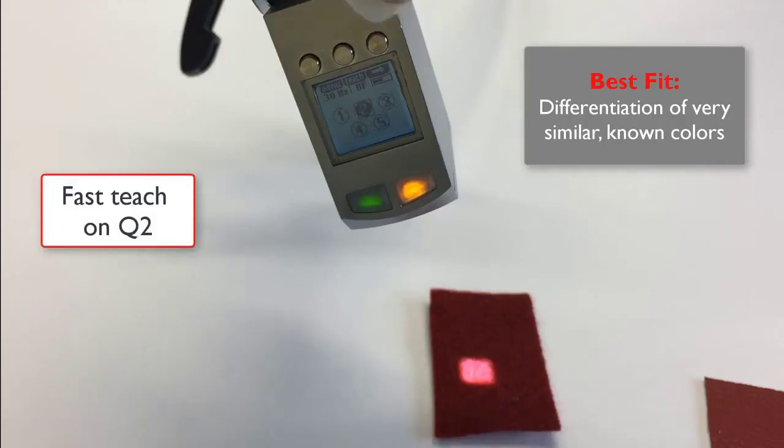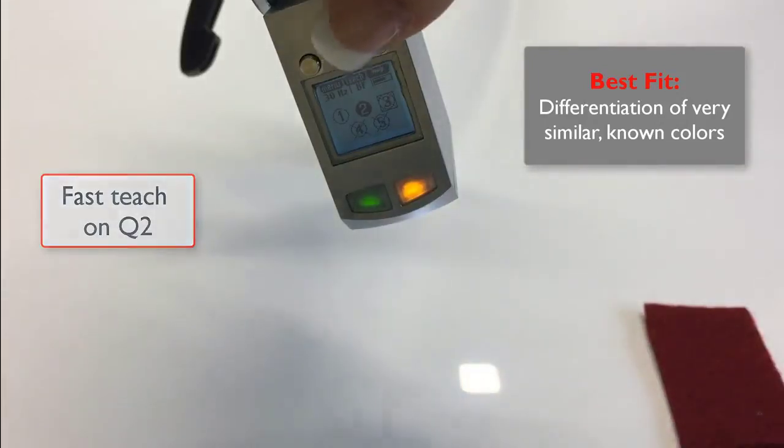Press and hold the teach button for three seconds. Two, one. Next. Next. And we'll teach the background. Press and hold to teach the background. So that's all three colors. And now it'll pick the closest color.